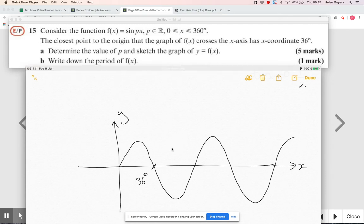Let's think about what the sine curve would normally look like. Normally that intercept would be at 180, and I'd have 360, and so on. So I'm thinking about what's happened there, and if I do 180 divided by 36, I get five. So that has squashed in by scale factor, or by a fifth. It was at 180, it's now at 36.